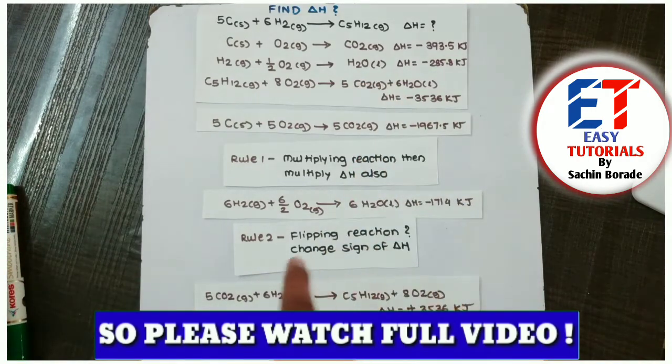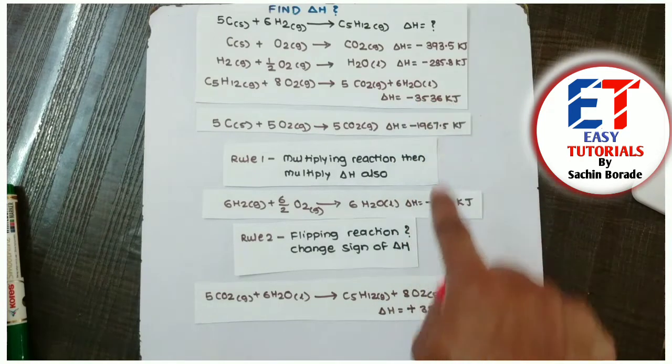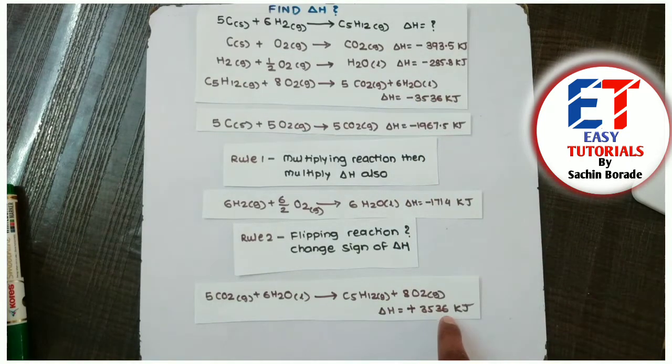Reactants on the product side and products on the reactant side. And delta H minus 3536 kilojoules will be plus 3536 kilojoules.